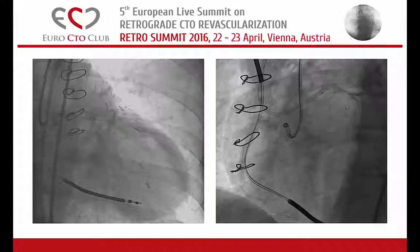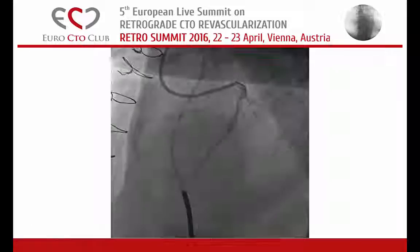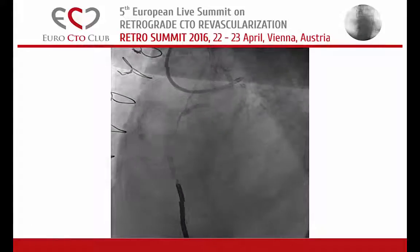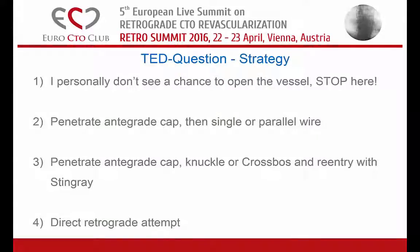Here we are going — it is a double injection and as you can see here, it was really an ostial occlusion. Ostial occlusion of the RCA — really very calcified, ostially occluded lesion. The question I ask myself is: I personally don't see a chance to open this vessel. I was thinking a lot about this vessel with an ejection fraction of 24. Do I penetrate the antegrade cap and try a parallel wire? Do I penetrate the antegrade cap, knuckle down, CrossBoss and Stingray, or try to go direct retrograde? What is your preferred strategy in this case?